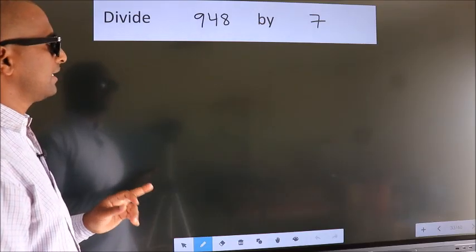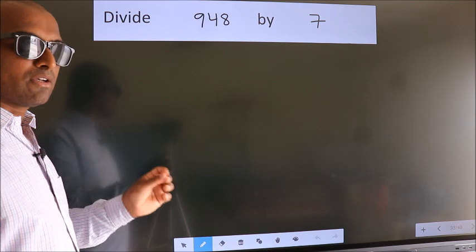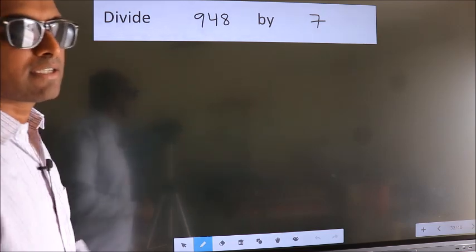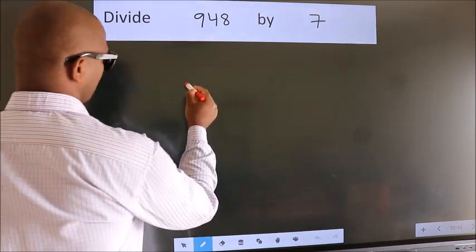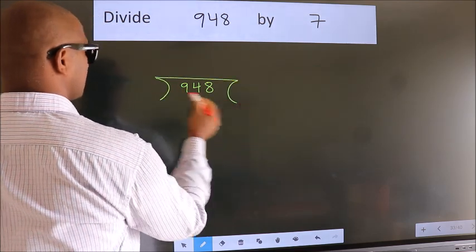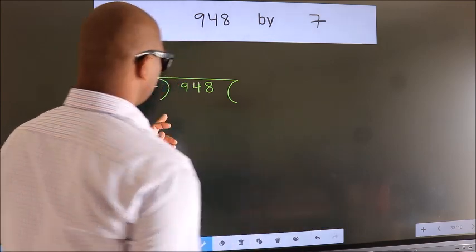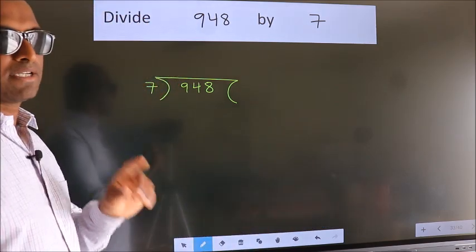Divide 948 by 7. To do this division, we should frame it in this way: 948 here, 7 here. This is your step 1.